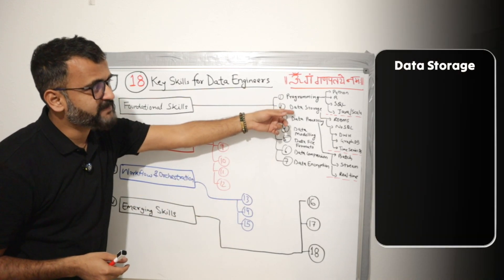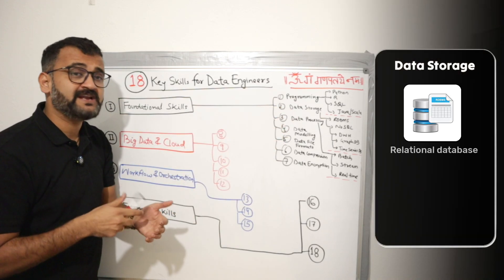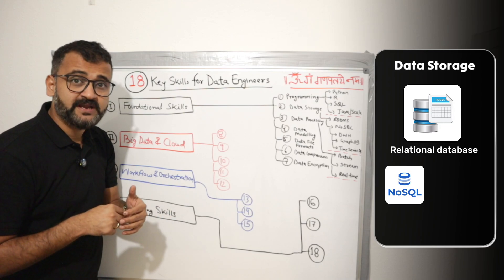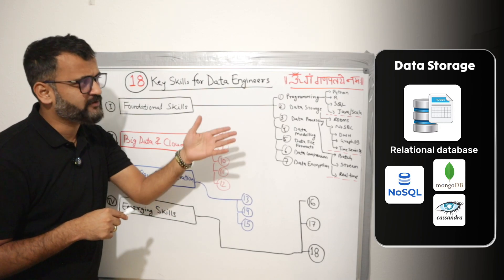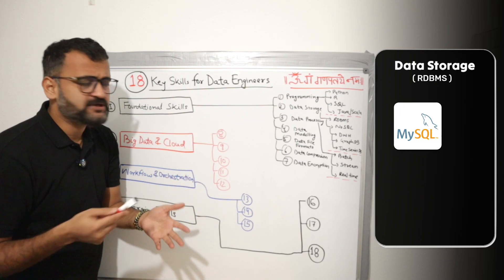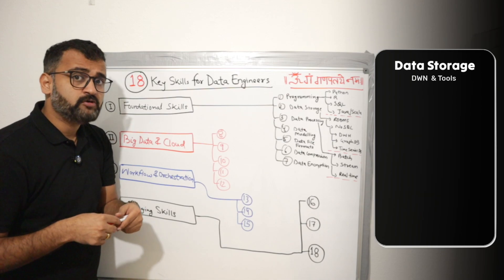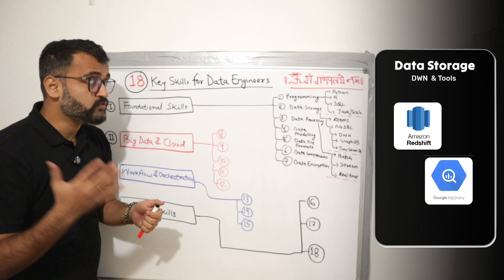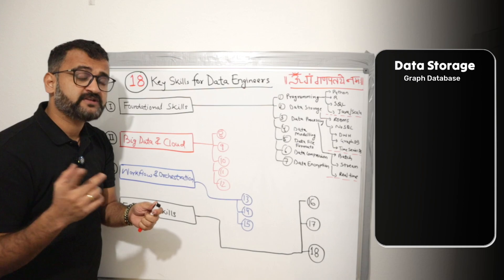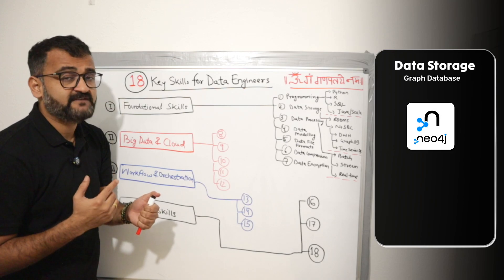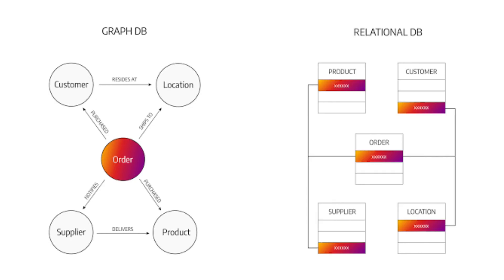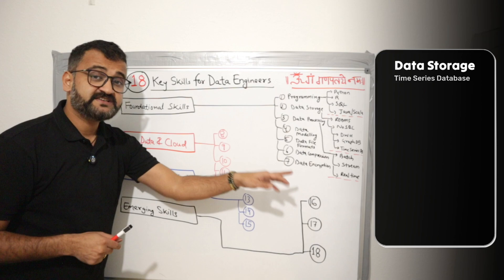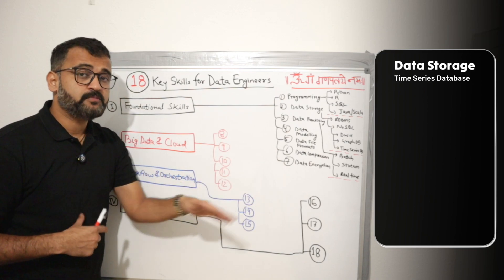From data storage perspective, you need to know the concepts around relational database, NoSQL database like MongoDB, Cassandra. For RDBMS, mostly MySQL, Oracle, data warehousing concepts, and some tools like Amazon Redshift, Google BigQuery, graph database. For example, Neo4j is very much a graph database. You need to understand how graph databases work.